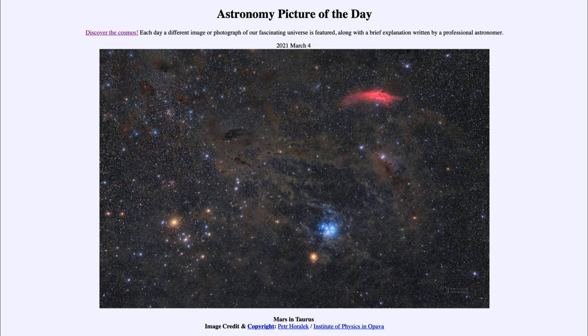Well, it is titled Mars in Taurus. So what do we see here? Mars, which we've seen a lot about recently in terms of the landing of the Perseverance rover, is here passing through part of the constellation of Taurus.